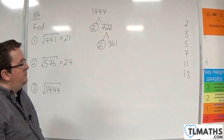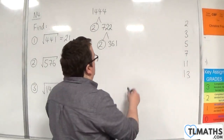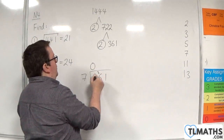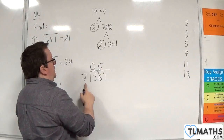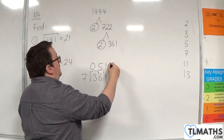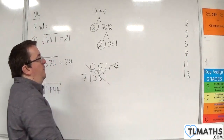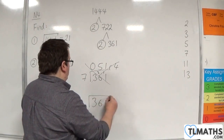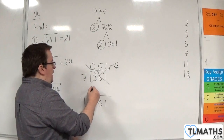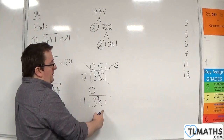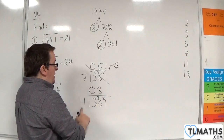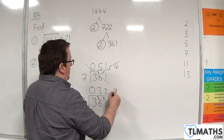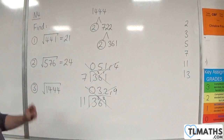5 is not going to go in either. So let's try 7: 7s into 3 goes 0, remainder 3; 7s into 36 go 5 with 1 remainder; 7s into 11 go 1, remainder 4. So that's out — not 7. Let's try 11: 11s into 3 goes 0, remainder 3; 11s into 36 go 3, remainder 3; and that leaves remainder 9. So 11 is out — we're not interested in remainders.